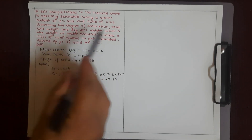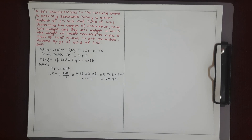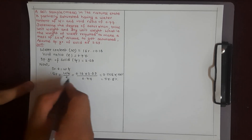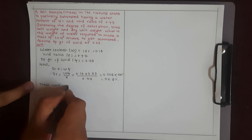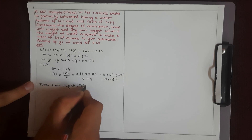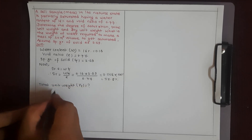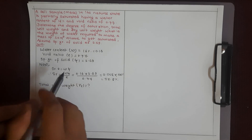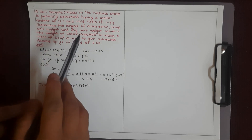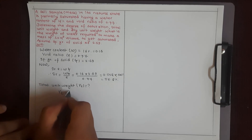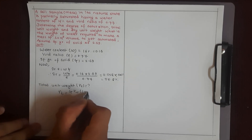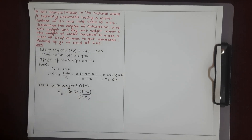Next, finding the total unit weight gamma t. The formula is: gamma t = G × gamma w × (1 + w) / (1 + e), where gamma w is the unit weight of water.